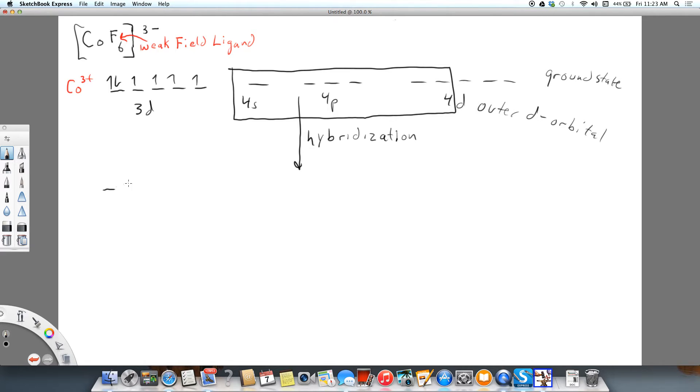We have our 3d, and this is a d6 ion. Here we have our hybridized sp3d2. Here's our pairs of electrons coming from the 6 fluorides. So what we have here are 6 sigma fluoride bonds. There's no excited state.